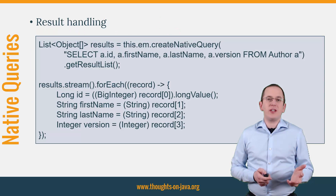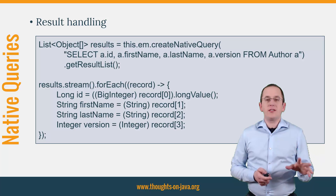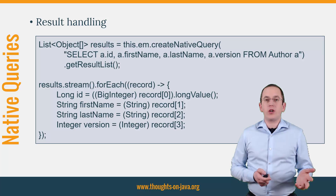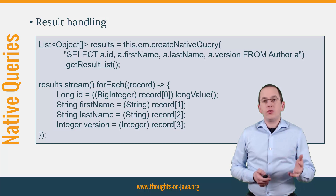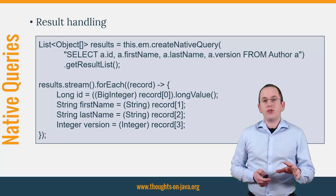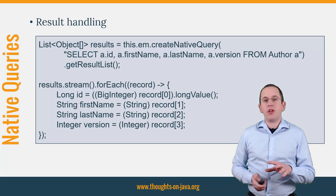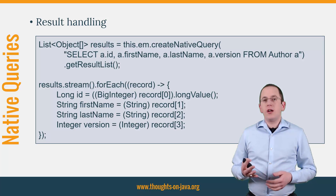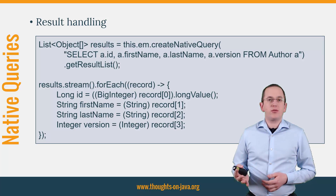You can see an example of a native query and the result handling here on the slide. Each object array in the list contains one record returned by the database. You then need to iterate through the array, cast each object to its specific type and map them to your domain model. This creates lots of repetitive code and typecasts.